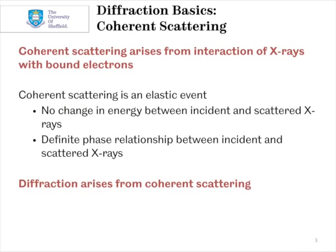Coherent scattering arises from the interaction of X-rays with bound electrons. Coherent scattering is an elastic event, meaning that there's no change in energy between the incident and scattered X-rays, and a definite phase relationship exists between the two as well. Diffraction arises from coherent scattering.